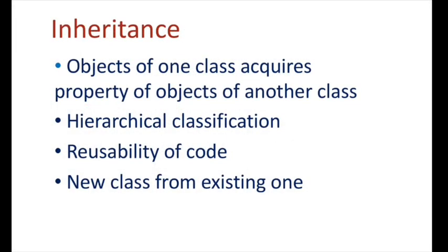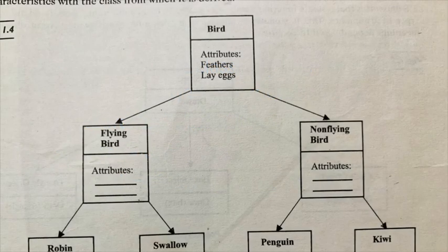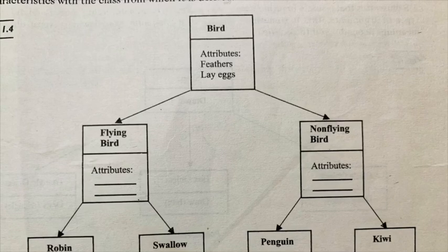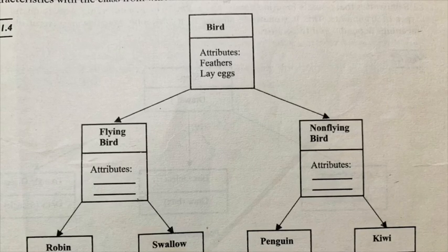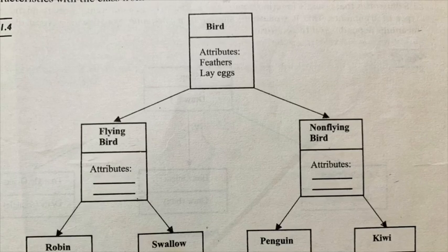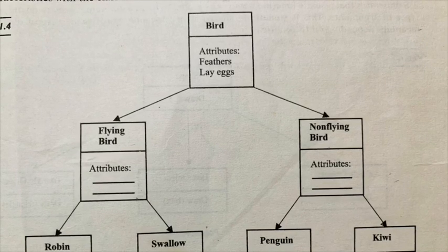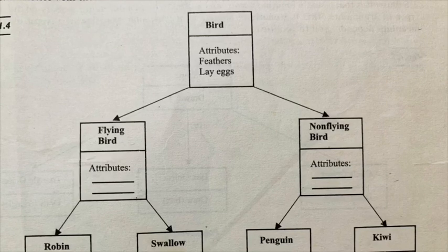Next property is inheritance. Inheritance is the process by which objects of one class acquire the properties of objects of another class. Inheritance supports the concept of hierarchical classification. For example, the bird robin is a part of class flying bird which is again part of class bird. In this figure, we can see that both flying bird and non-flying bird are inheriting from the class bird.